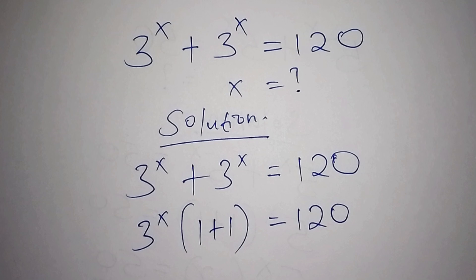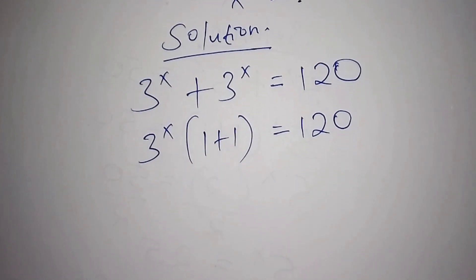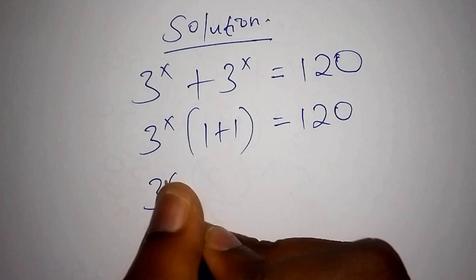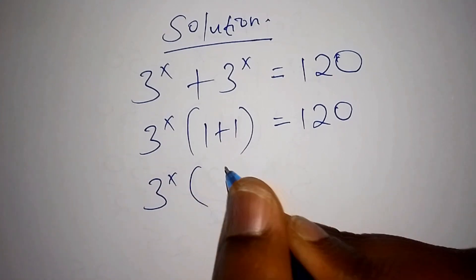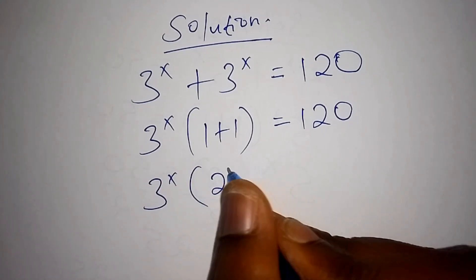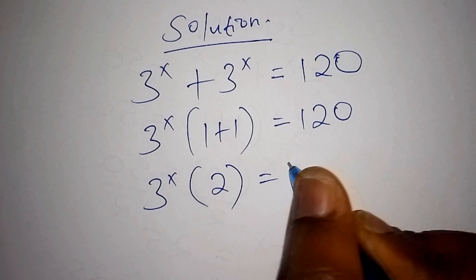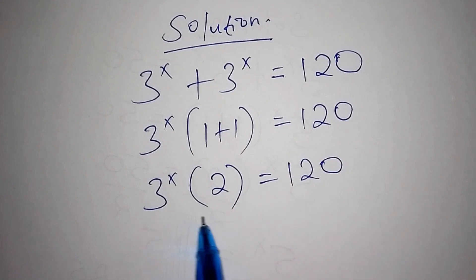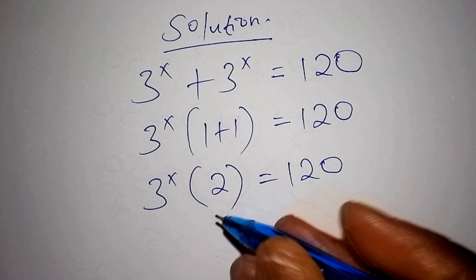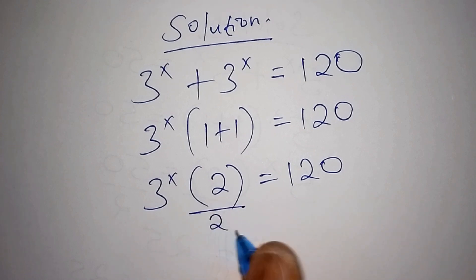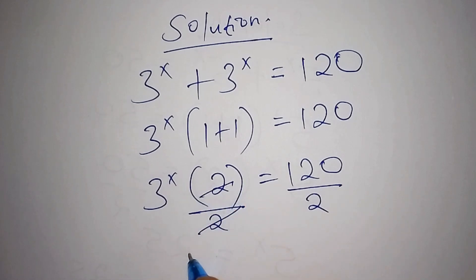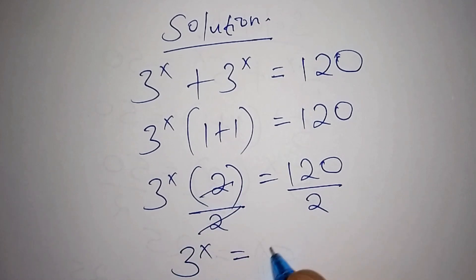Now we work out the number inside the bracket: 1 plus 1 is 2, so 3 to the power of x times 2 equals 120. We want to remain with 3 to the power of x, so we divide both sides by 2. The 2s cancel and we get 3 to the power of x equals 60.